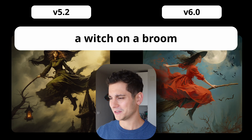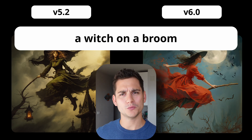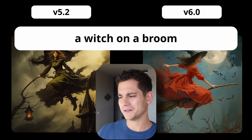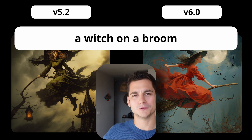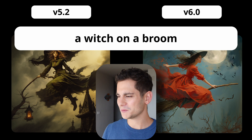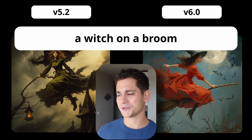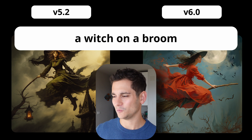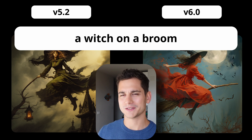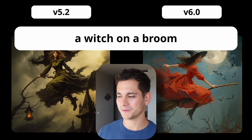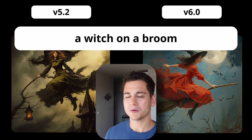The next one surprised me — I'd read online that Midjourney just doesn't know how to draw a witch on a broom. They were right about version 5.2: there is no broom anywhere, she's kind of holding a tree in a way that doesn't make sense — you would fall down holding it like that. We do have a castle in the background and a little lantern, but no broom, which is exactly what we asked for. Mission failed for this one. Whereas Midjourney 6.0 produces a perfect picture of a witch on a broom.